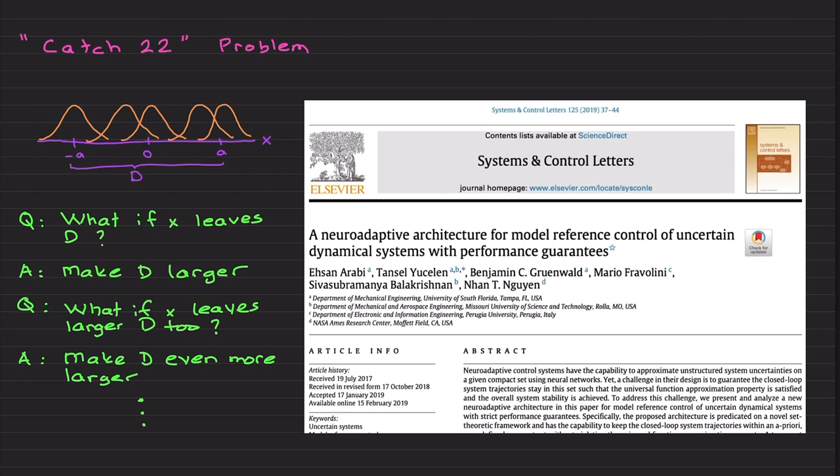If your system state X leaves this compact set, you no longer have neurons. You cannot apply universal function approximation theory. Your system is in trouble. Your adaptation will be in trouble. You have no neurons, zero. In this case, instability may happen. To avoid this, you can include more neurons, but how more is more, or how large should this compact domain D be? For many years in the literature, this was the answer from scientific researchers: make it larger, even larger, more larger. There are some solutions as well to address this catch-22 problem. I am going with the name that is known in the literature.